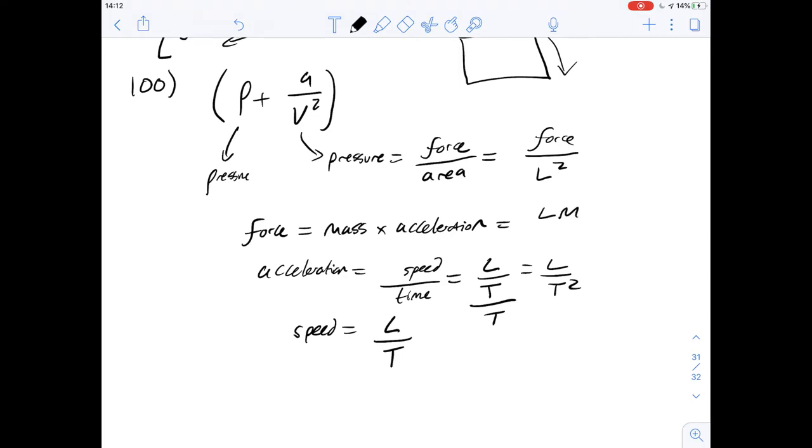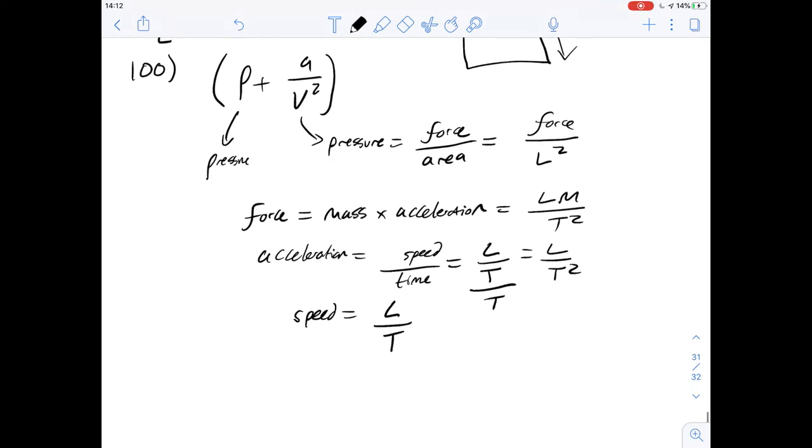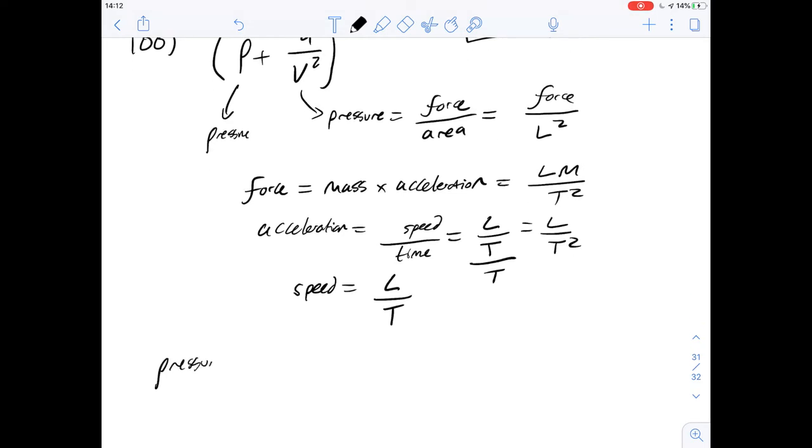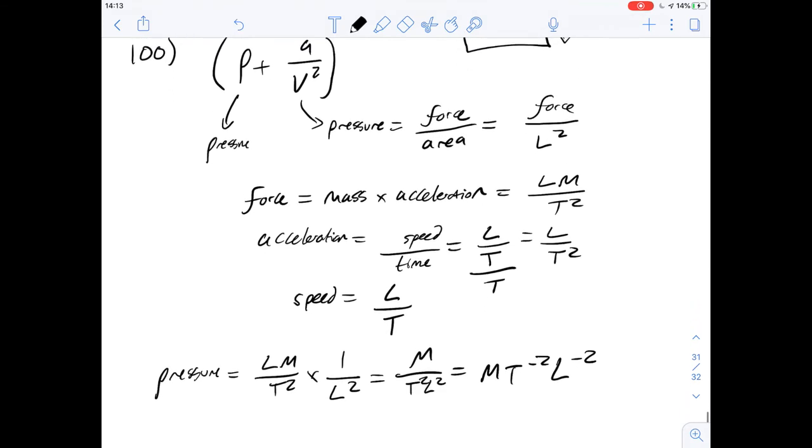So that means force is going to be L times M for mass over T squared L squared. So then if we put that back into our pressure equation above, we get force, which is going to be LM over T squared multiplied by one over L squared. These Ls cancel out and you end up with mass over T squared L squared. Or for pressure, then you get T to the minus two L to the minus two.